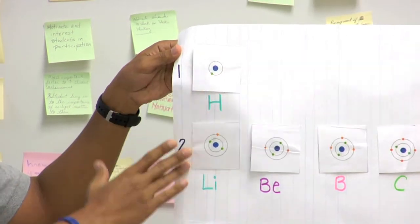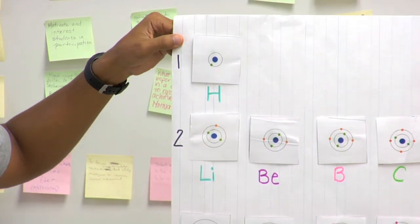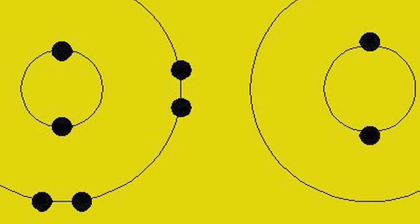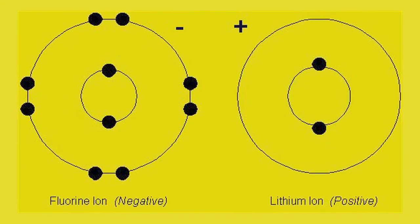Each circle around the nucleus represents a different energy level. Atoms like to have completely full or empty outer energy levels. This makes them stable.